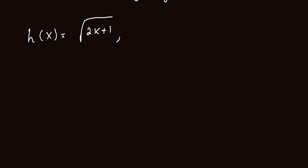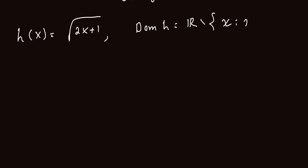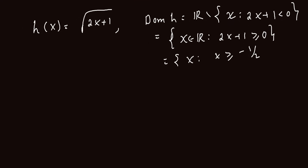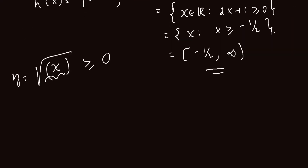If we have h of x equal to square root of 2x plus 1, then the domain is the set of all x such that 2x plus 1 is greater or equal to 0. Solving, x is greater than or equal to negative 1 over 2. In general, the range of any square root function is always greater or equal to 0, so the range will always start from 0 up to positive infinity.